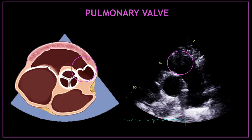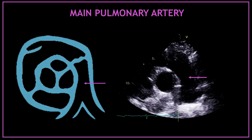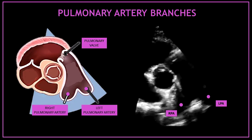The first valve you can see at the top from right to left is the pulmonary valve. Under the pulmonary valve, that vertical and narrow echo-free space corresponds to the main pulmonary artery. At the bottom, emerging from the main pulmonary artery, you can visualize the pulmonary artery branches — on the left you have the right pulmonary artery and on the right you have the left pulmonary artery.